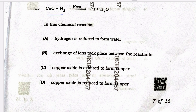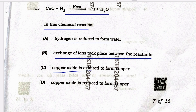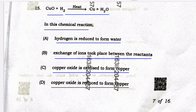Question number 15: CuO + H₂ (heated) → Cu + H₂O. In this chemical reaction — option A: hydrogen is reduced to form water; option B: exchange of ions took place between the reactants; option C: copper oxide is oxidized to form copper; option D: copper oxide is reduced to form copper. The correct answer is option D — copper oxide is reduced to form copper.